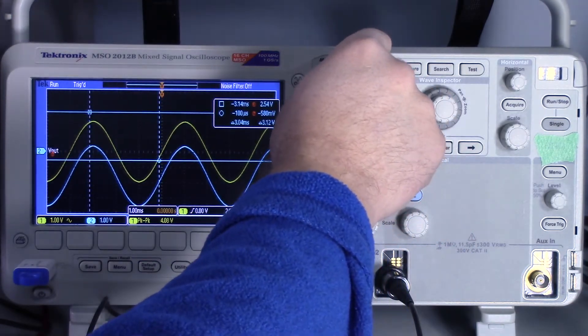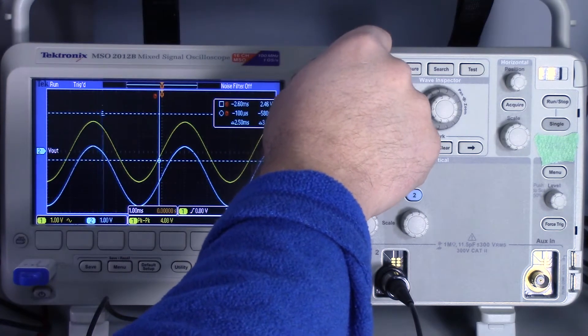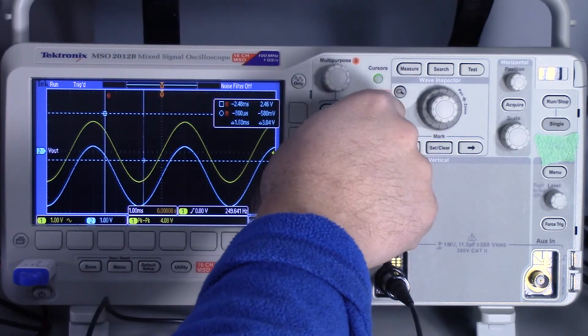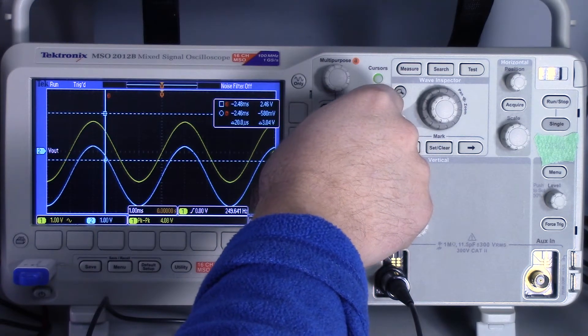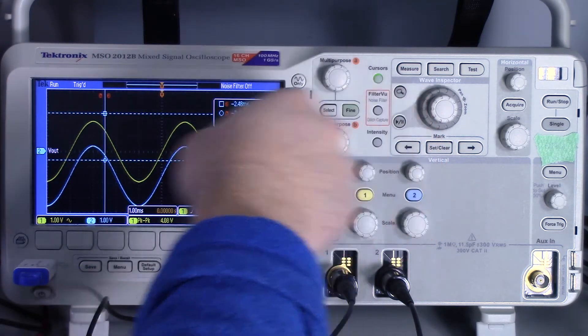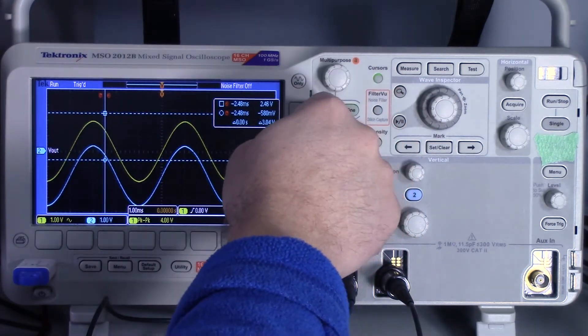So what I'm going to do first is I want to line up both channel A and channel B - multi-purpose button A, multi-purpose B - on the same point or along the same point in time, and then I want to press select. Now I want to move both of these points, one onto the input and one onto the output. Yeah, that's probably about close.